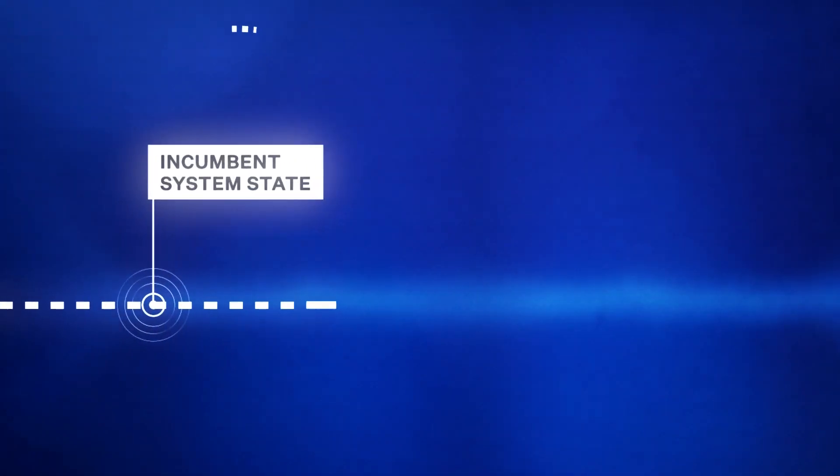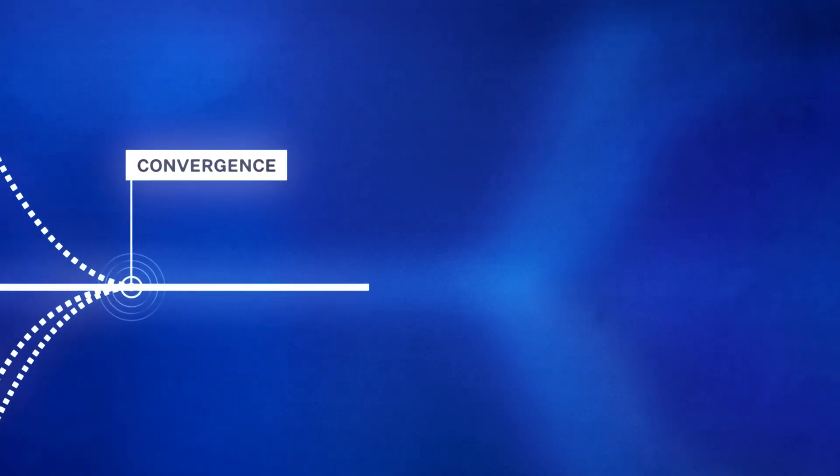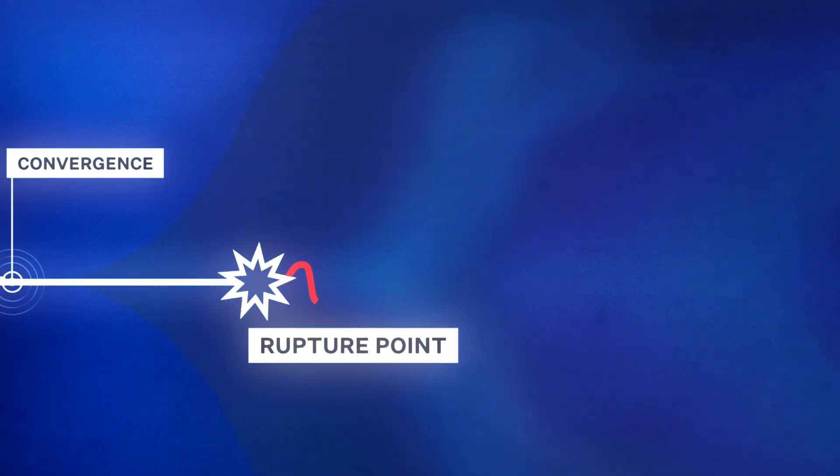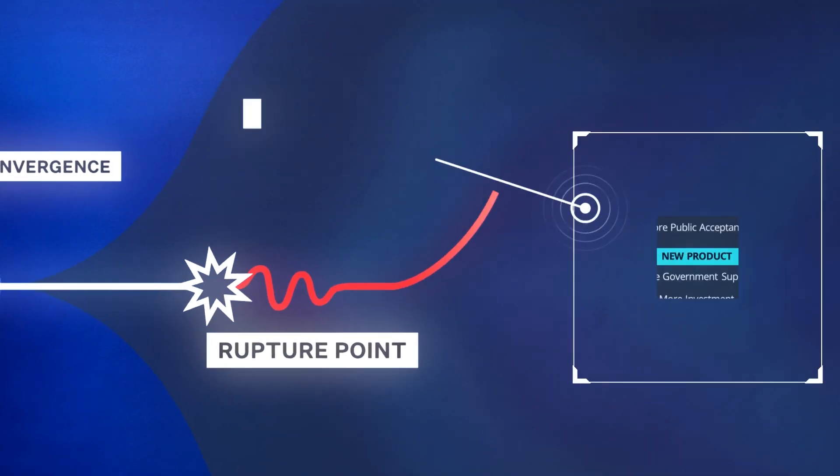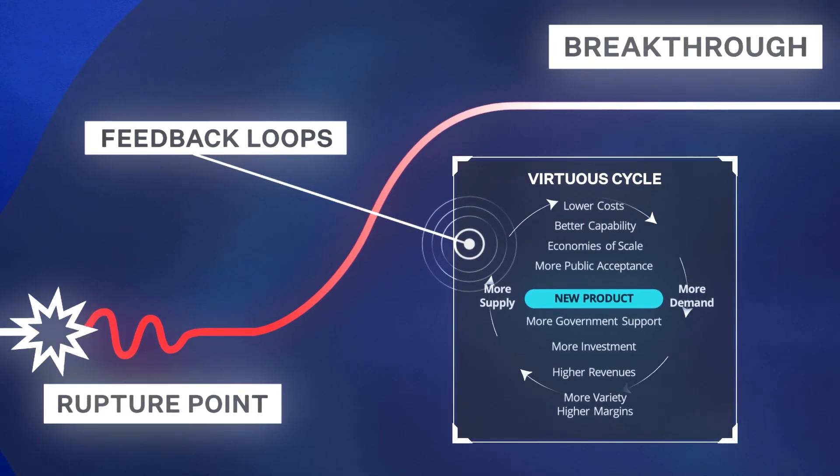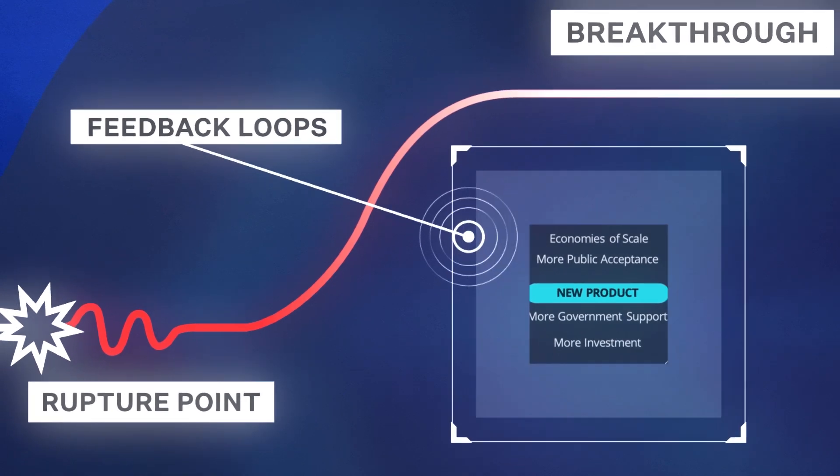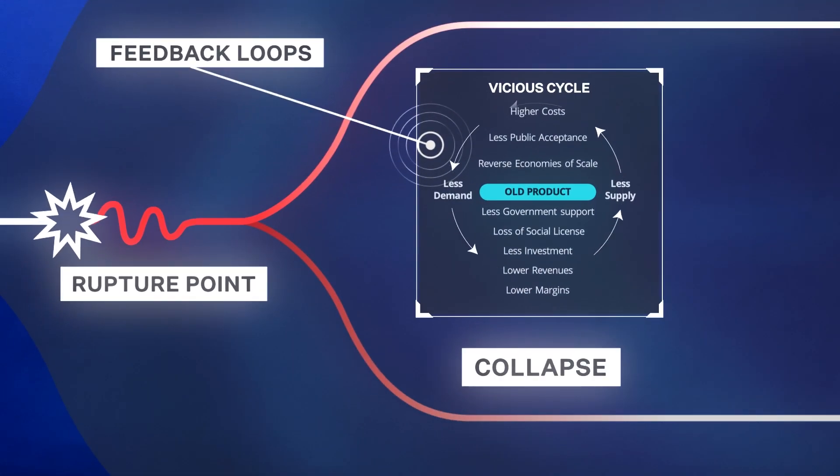For the first time in history, we can see this convergence and recognize its implications. We need no new technologies, just continuing exponential improvement in cost and capabilities, driving rapid S-curve adoption. Together, they unveil a pathway to a whole new production system and the inevitable collapse of the old.